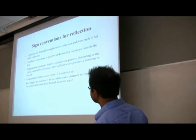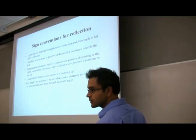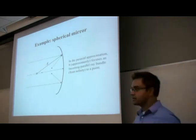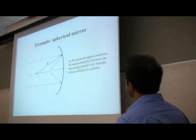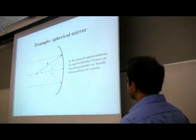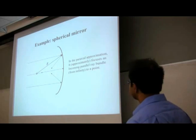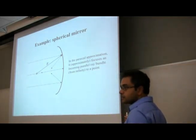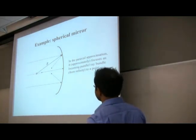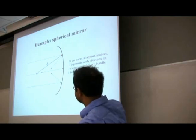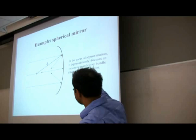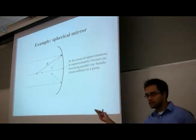Ray angles are measured counterclockwise as positive. For a spherical mirror — a portion of a sphere with radius of curvature r — light coming in parallel to the optical axis is reflected to a single focal point. In the paraxial approximation, we can calculate the focal length from the radius of curvature using simple geometry, since the angle of incidence equals the angle of reflection and the normal bisects the angle.